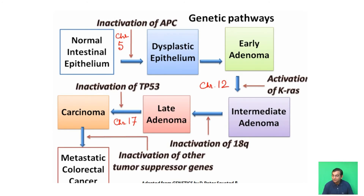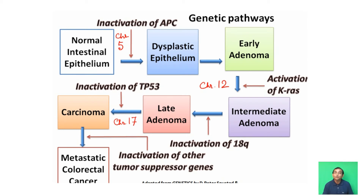As discussed, the multi-hit mechanism means more than one mutation is responsible for cancer development. An important example is colorectal cancer, where several mutations are responsible for the development of metastatic colorectal cancer. Here we describe the genetic pathways of metastatic colorectal cancer. Normal intestinal epithelium develops into dysplastic epithelium due to inactivation of the APC gene — adenomatous polyposis coli — located on chromosome number 5.